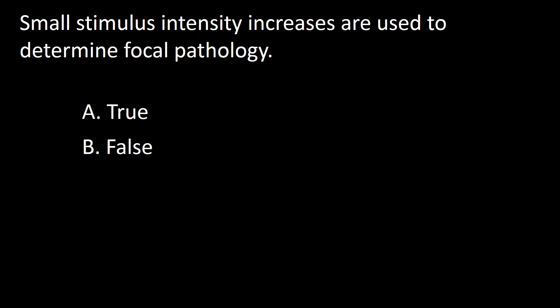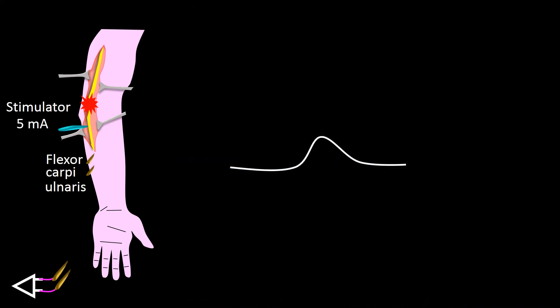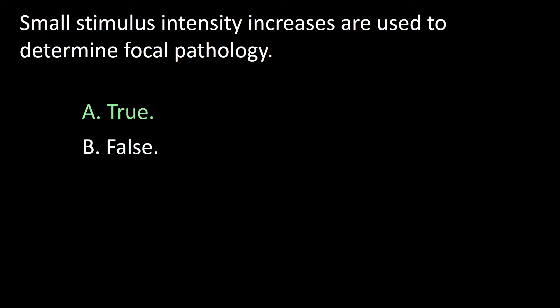Next question: small stimulus intensity increases are used to determine focal pathology. A: True, B: False. One indicator of focal pathology is an increased threshold for stimulation. If at one distal level it takes 5 mA to trigger a good-sized compound muscle action potential, and moving the electrode a short distance proximally the same intensity does not produce a good-sized compound motor action potential, but increasing the intensity does, you may be dealing with a conduction block. So the answer is A.